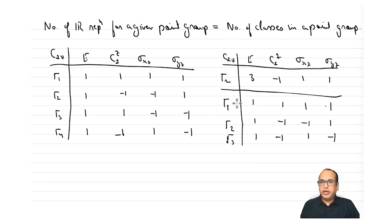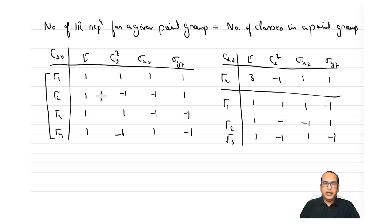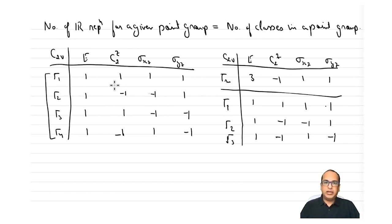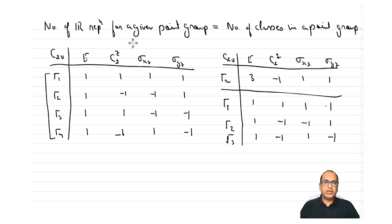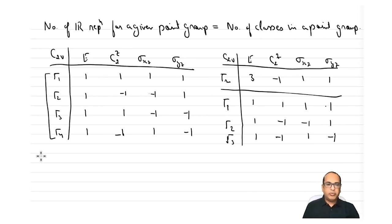Once we have irreducible representations we can do many more things. The important question is: what is the best way to find irreducible representations? Let us see the different methods for finding irreducible representations for a point group.